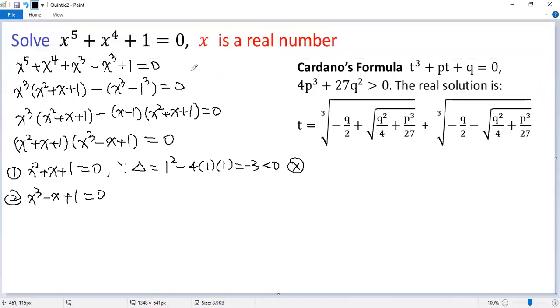So given t to the power of 3 plus pt plus q equals 0, and 4p cubed plus 27q squared is greater than 0, then the real solution would be t equals the sum of 2 cubic roots.